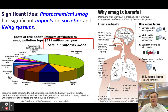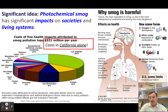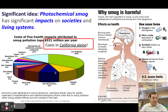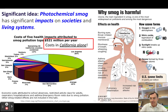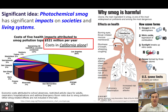Let's take a look at some of those impacts. The big idea is that smog has significant impacts on people and living systems — this is, after all, an environmental systems and societies class. We've been able to study the economic impacts of photochemical smog in California; about 10 years ago, they estimated about half a billion U.S. dollars annually in healthcare costs associated with smog.